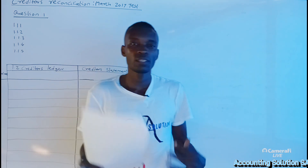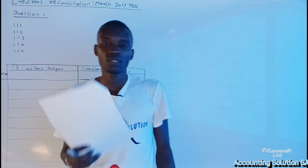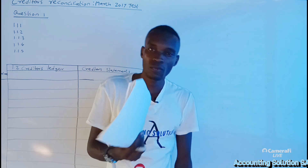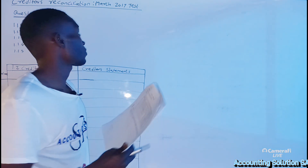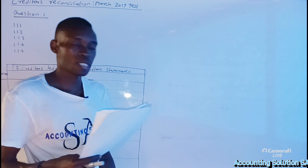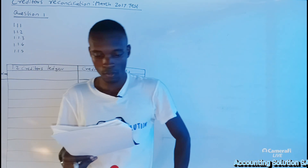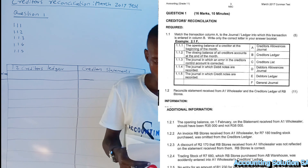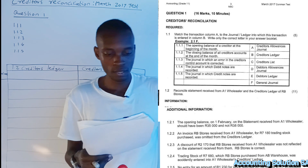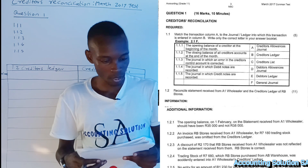Okay grade level students, in this video we are going to do a creditors reconciliation statement. The question paper for this video is for the test written in March 2017, which was a test one preparation. The first required section was multiple choice — we can't ignore this one because it's also related to the creditors reconciliation statement.